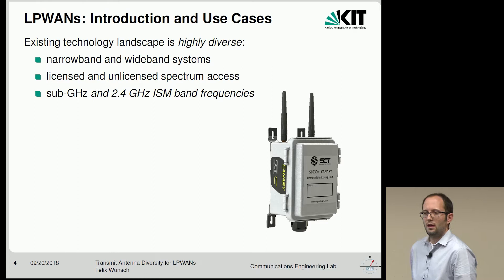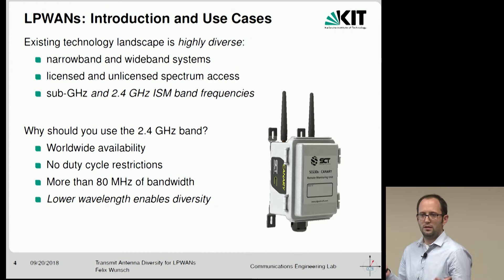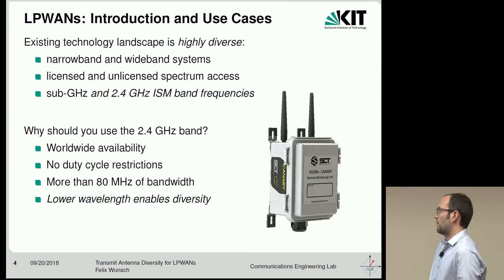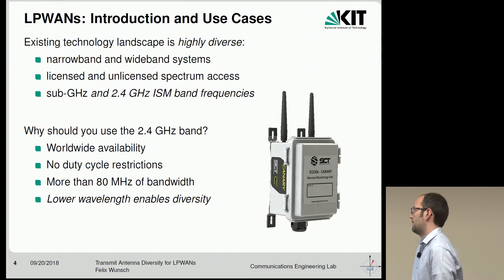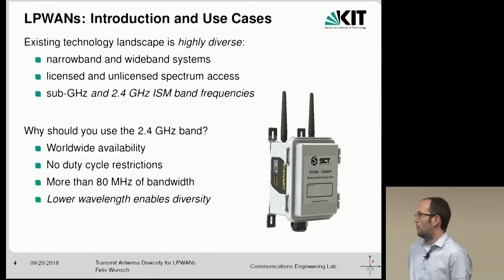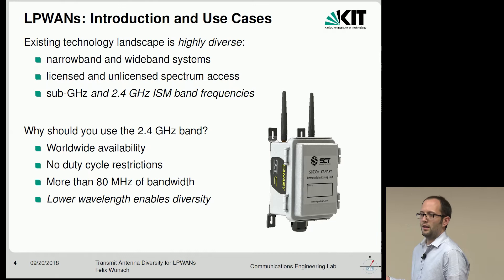But some actually use the 2.4 GHz ISM band. You might ask why, given the higher propagation loss. There are a few points in favor of 2.4 GHz. First, worldwide availability — think of a tracking application that needs to work in the US, Europe, or Asia; that's not so easy in sub-gigahertz bands. There's no duty cycle restrictions, which matters for base stations needing to acknowledge packets. You also have 80 MHz of bandwidth, and even if most is occupied by Wi-Fi and Bluetooth, a small fraction is enough for an LPWAN, especially if you find holes in the time-frequency plane.